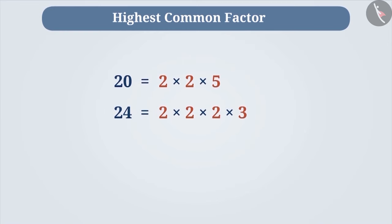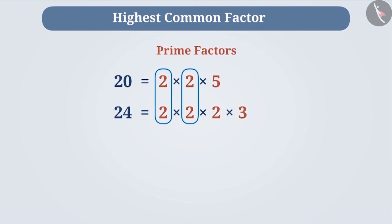Now check for the common factors among the prime factors of these two numbers. As you can see, 2 is repeating twice among the prime factors of 20 and 24. There is no other common factor between the two. Therefore, the HCF of 20 and 24 is 2 × 2 = 4.